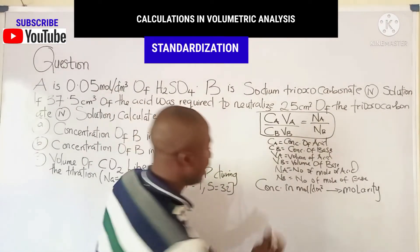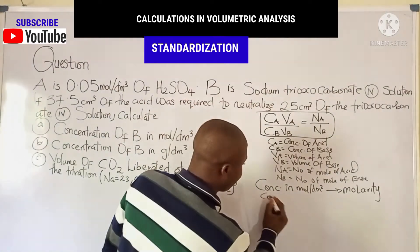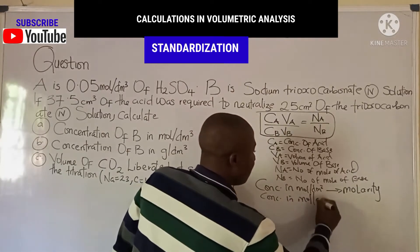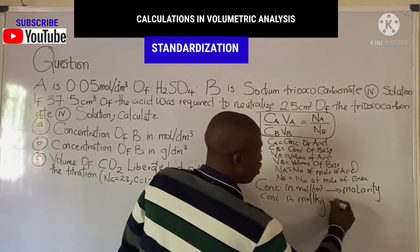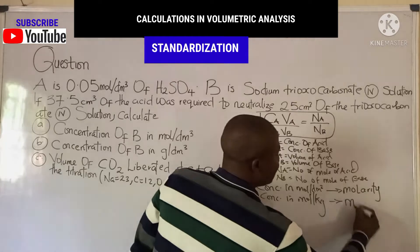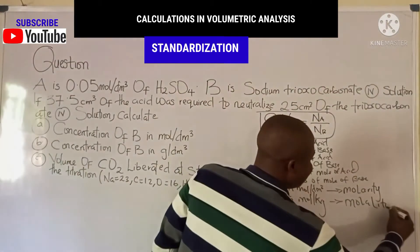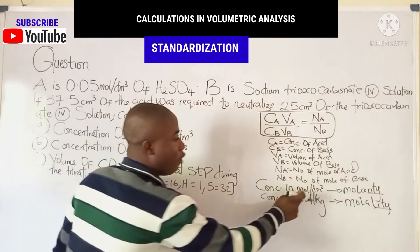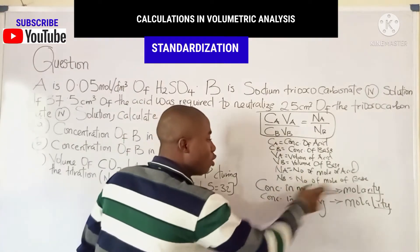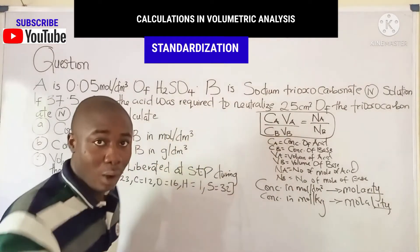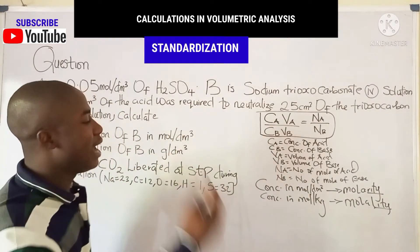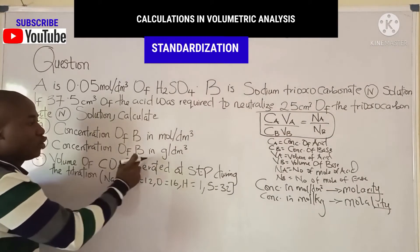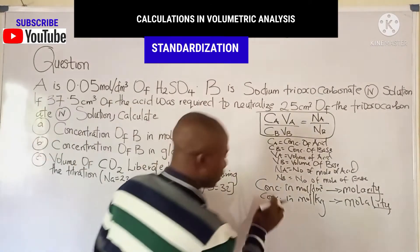We also have concentration in moles per kg of solvent, which is molality — these are different units. For moles per dm³ we are talking about molarity. The question asks us to calculate the concentration of B in grams per dm³.